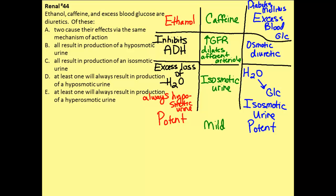For response A, it says two caused their effects by the same mechanism of action. We actually saw that all three diuretics fit into different classifications: one inhibits ADH, one increases GFR, and one is an osmotic diuretic. So we can eliminate A. Response B says all result in the production of a hypoosmotic urine, but ethanol is the only one that results in a hypoosmotic urine. So we can also eliminate B.